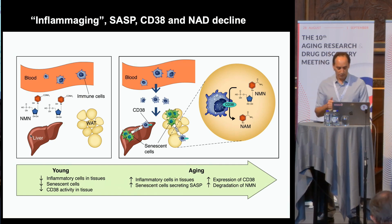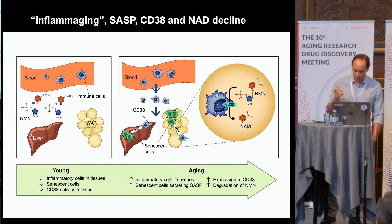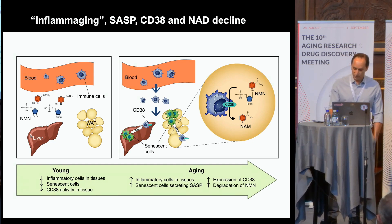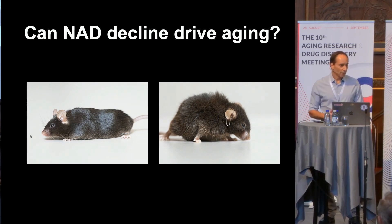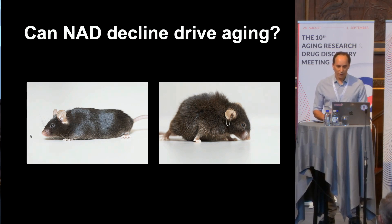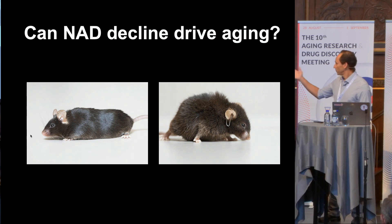The next question is unpublished. Can NAD decline drive aging? It is still a question — I don't know the answer. Essentially, what I'm showing you is a young mouse and an old mouse. People with deficiency of vitamin B3 develop this terrible disease called pellagra, not aging phenotypes per se. One caveat about pellagra: it kills you very fast — in three or four years you're dead — so you might not even have time to develop accelerated aging.